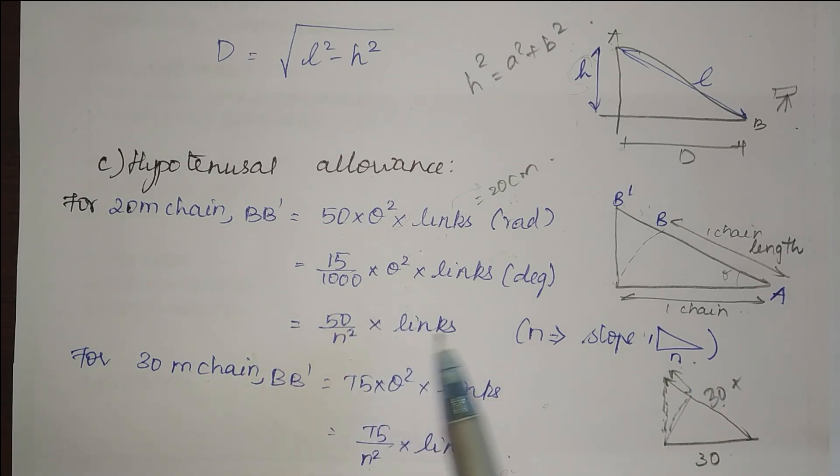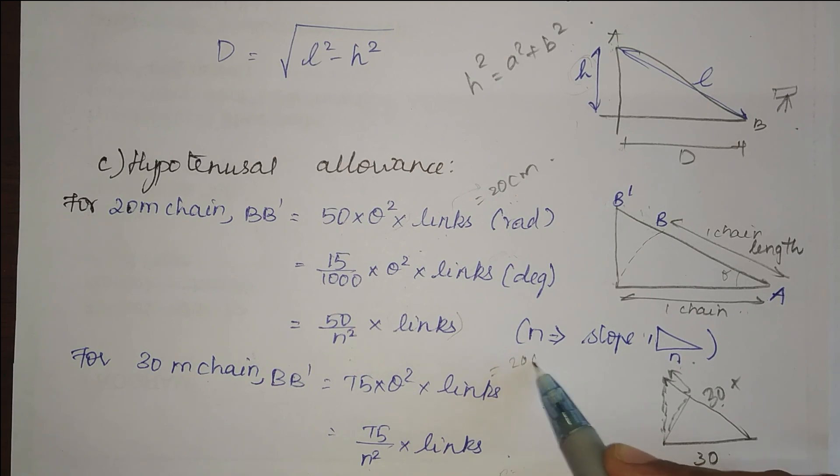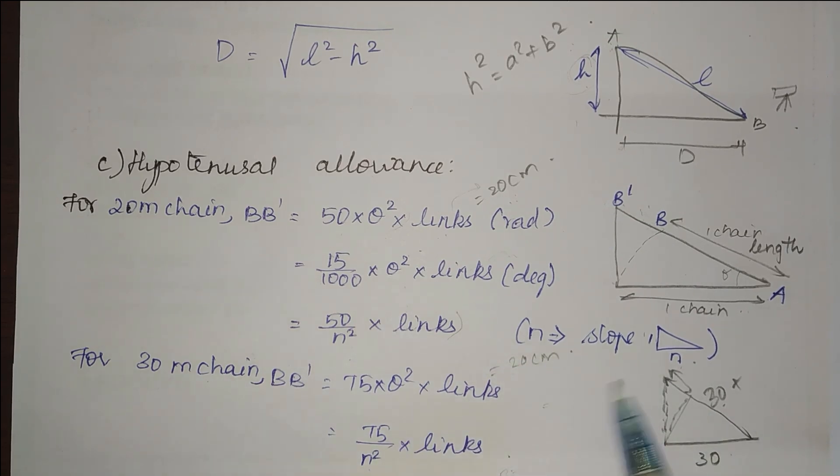For a 30 meter chain the formula slightly changes. It is not 50, it is 75 theta squared into link distance of link, which is always going to be 20 centimeter. For the case of slope it is 75 divided by n squared into link.